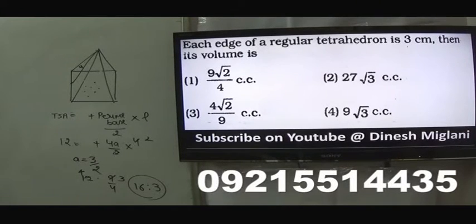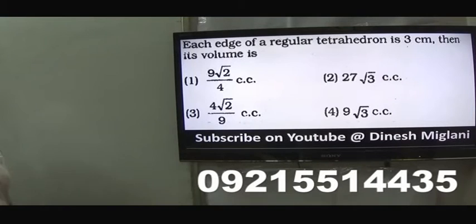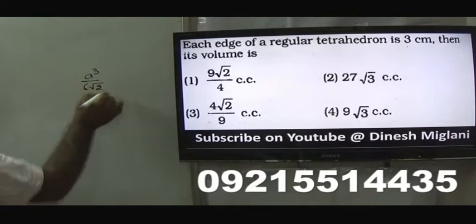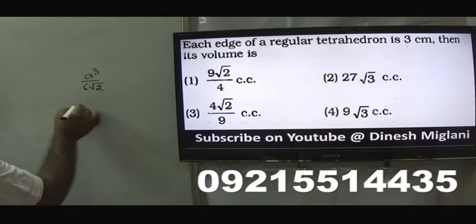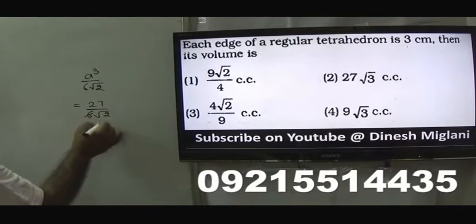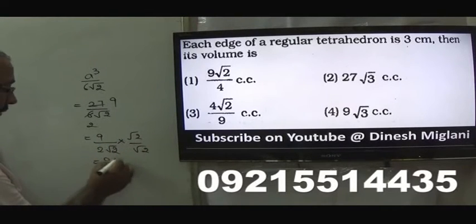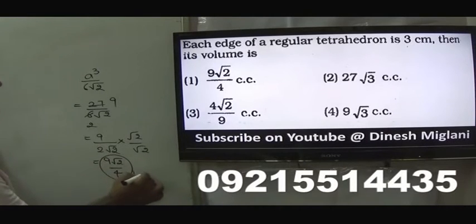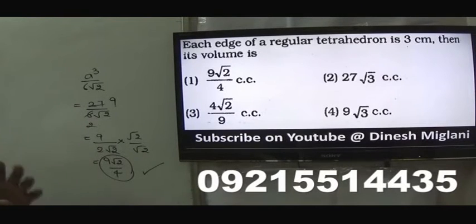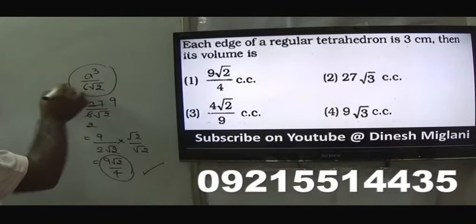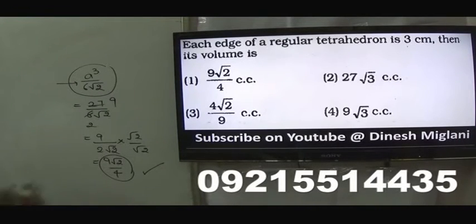Next question: each edge of a regular tetrahedron is 3. Find the volume. The formula for volume of a regular tetrahedron is a³ / (6√2). With a = 3, that is 27 / (6√2) = 9 / (2√2). Multiplying and dividing by √2, we get 9√2 / 4 cubic centimeters. First option is my answer. This is a very important formula because it is generally not given in books.